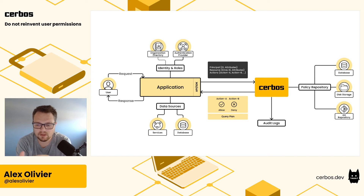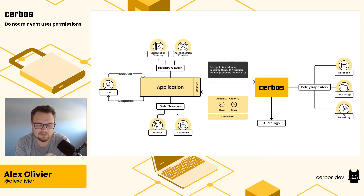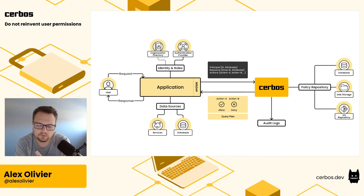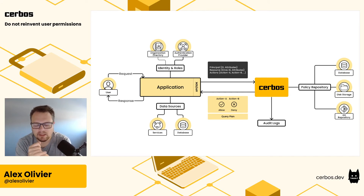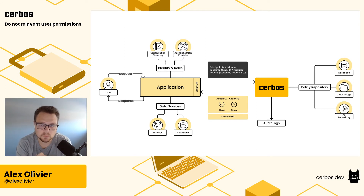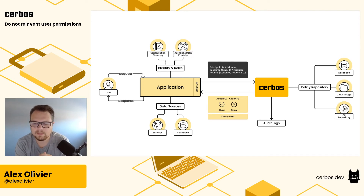The second main advantage of having your Cerbos authorization checks standalone from your application is that regardless of where requests are coming from — a Node API, a front-end React app, or an async worker processing queue in the backend — because all the checks go through a Cerbos instance, you get a clean, consistent audit log: at this time, this user tried to do this action on this resource, and the result was allowed or denied. For debugging purposes this is great, but it's especially valuable in regulated environments or if you have certifications like ISO 27001 or SOC 2.